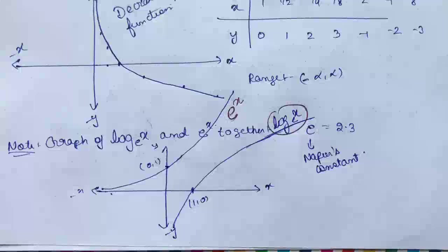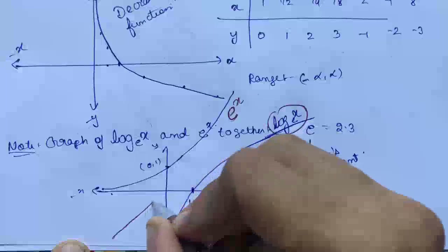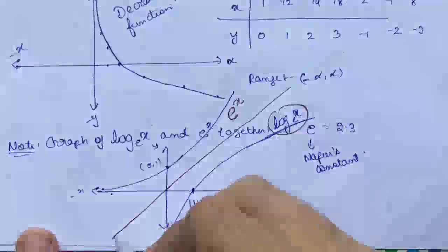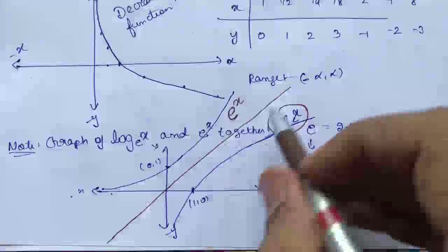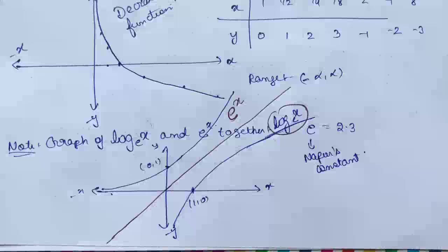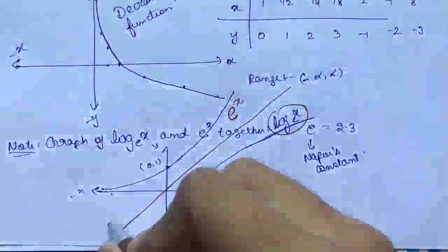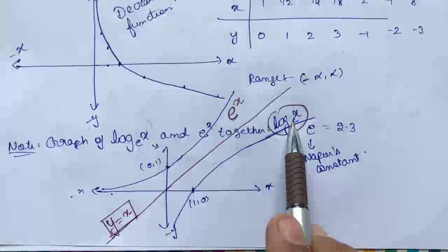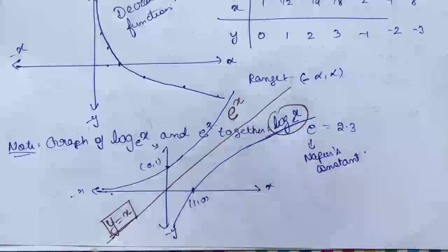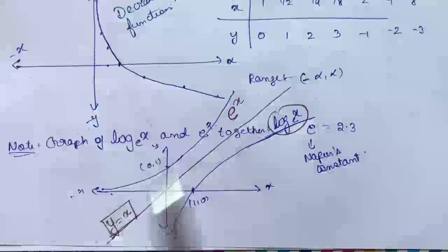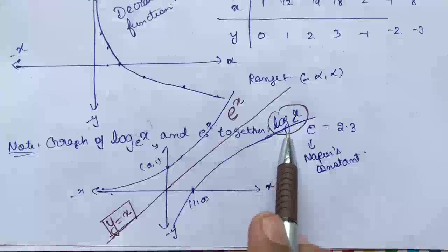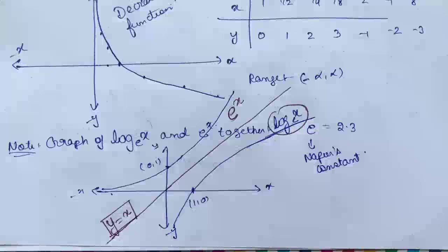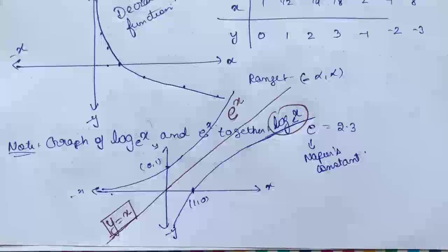If we look at both graphs carefully: log x cuts the x-axis at (1, 0) and e^x passes through (0, 1). If we draw a line through the origin of slope 1, these two graphs are mirror images of one another about this line. The equation of this line is y = x. So e^x and log(x) base e are mirror images of one another about the line y = x.